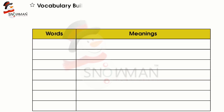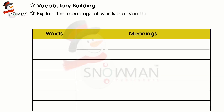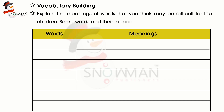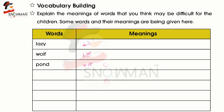It's vocabulary building now. Explain the meanings of words that you think may be difficult for the children. Some words and their meanings are given here. Lazy — Sust. Wolf — Ulf, Bhaediyah. Pond — Talaab.